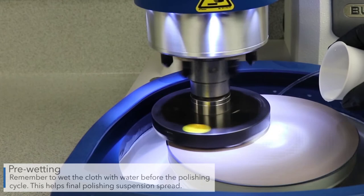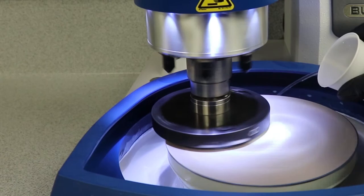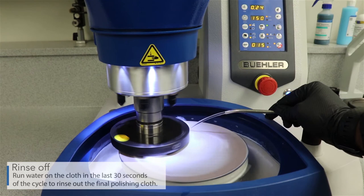During the cycle, slowly add 5 to 10 milliliters of final polishing suspension to the cloth per minute. Run water on the cloth in the last 30 seconds of the cycle to rinse out the final polishing cloth.